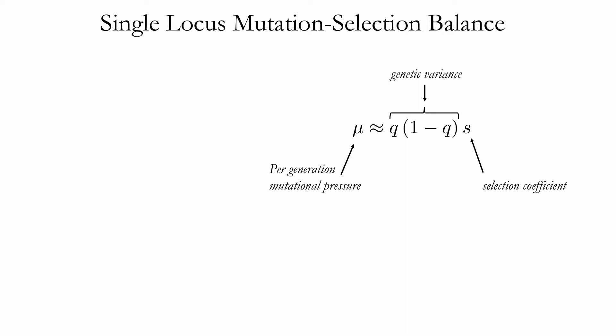In this model, which I'm presenting in a fairly simplified form, we imagine a single gene producing disease alleles at rate mu. This mutational pressure has to be balanced by the selection response, which is given by the genetic variance times the selection coefficient. And if the disease is fully penetrant, then the selection coefficient is just the fitness cost of disease.